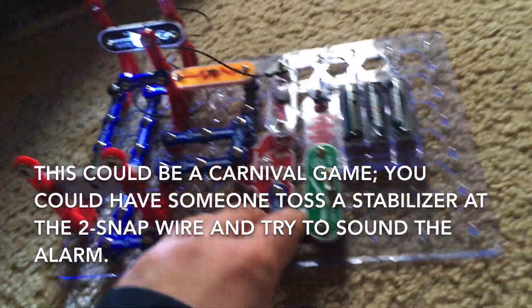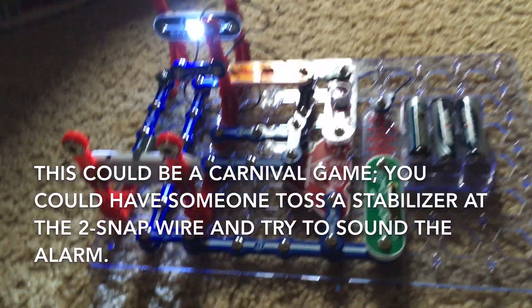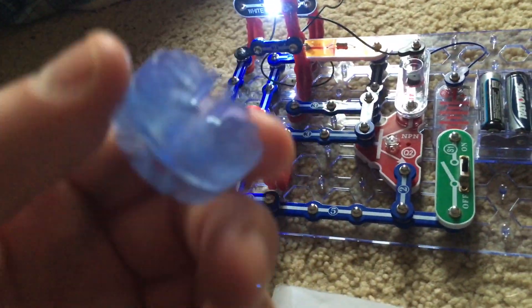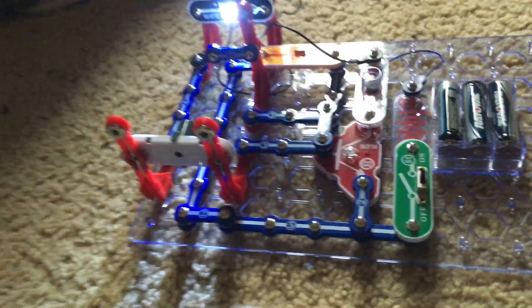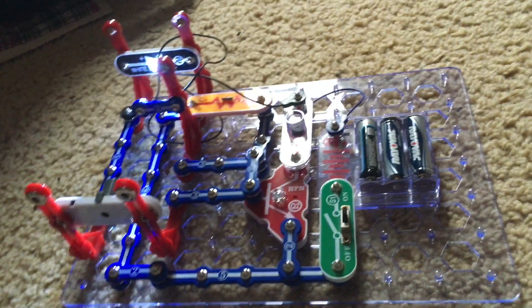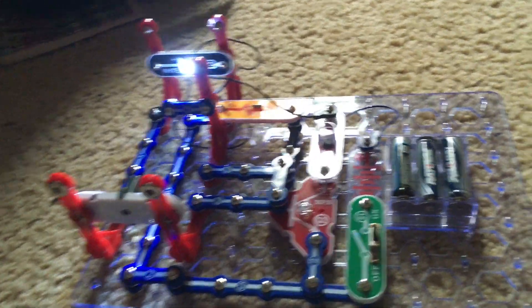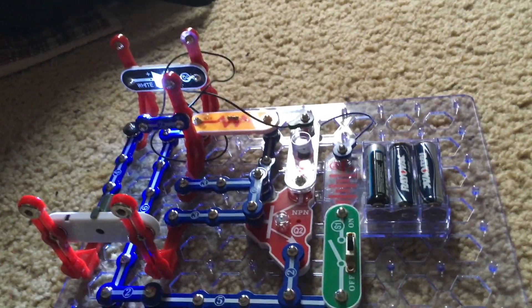Now you could pretend that this is a carnival game and you could use a vertical stabilizer in this kit and throw it at the two snap wire. Throw it gently and the two snap wire is the target. Watch what happens when I throw it at the two snap wire.